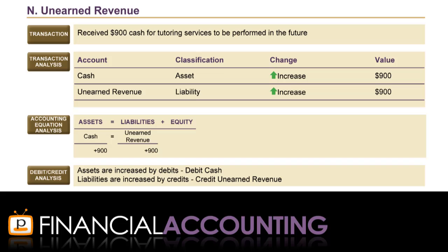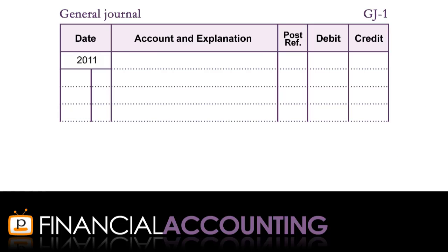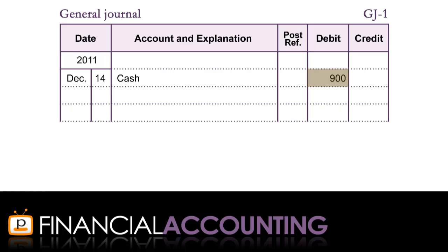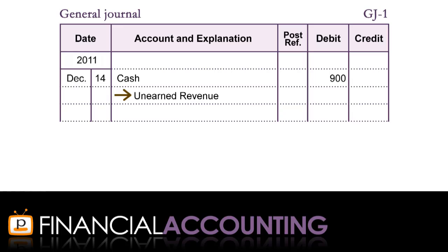So now we can go ahead and record the transaction in the General Journal. The first item to be recorded is the date of the transaction, December 14. Next, write in the name of the account debited — cash. Leave the posting reference column blank for now and fill in the $900 amount in the debit column. Next, enter the credit side of the transaction by entering the name of the account to be credited — unearned revenue — on the line below, indented to differentiate it from the account debited. Then enter the amount in the credit column. The final step is to record below the journal entry a short description of the transaction.